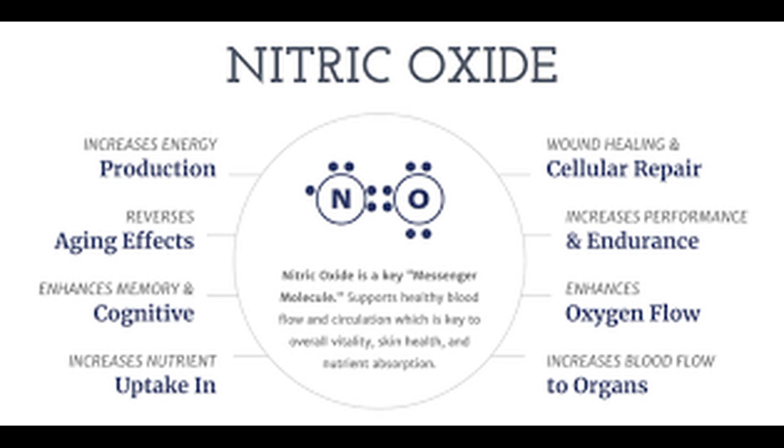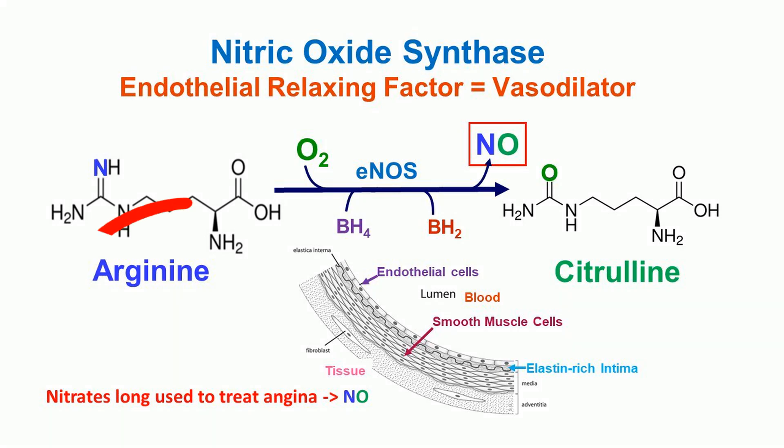Nitric oxide, or NO, is a unique neurotransmitter because it is a gas. Unlike traditional neurotransmitters, nitric oxide is synthesized on demand and diffuses freely across cell membranes. It is synthesized from L-arginine by the enzyme nitric oxide synthase, or NOS. Nitric oxide activates guanylate cyclase, producing cyclic GMP, a secondary messenger.